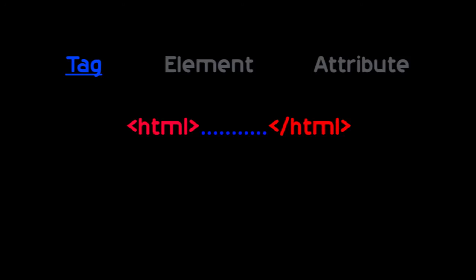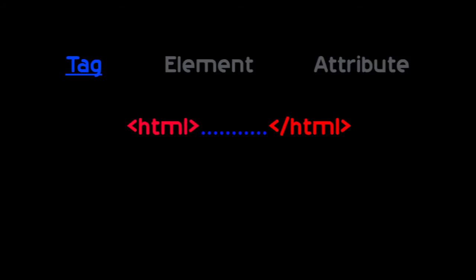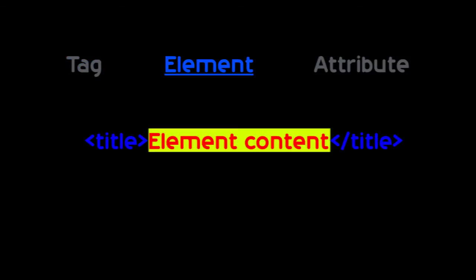In HTML there are three major parts: tags, elements, and attributes. First, tags — tags are used to define what type of content you have to display on the web page. These tags are specified using text enclosed by angular brackets. Every HTML tag will contain a close tag.